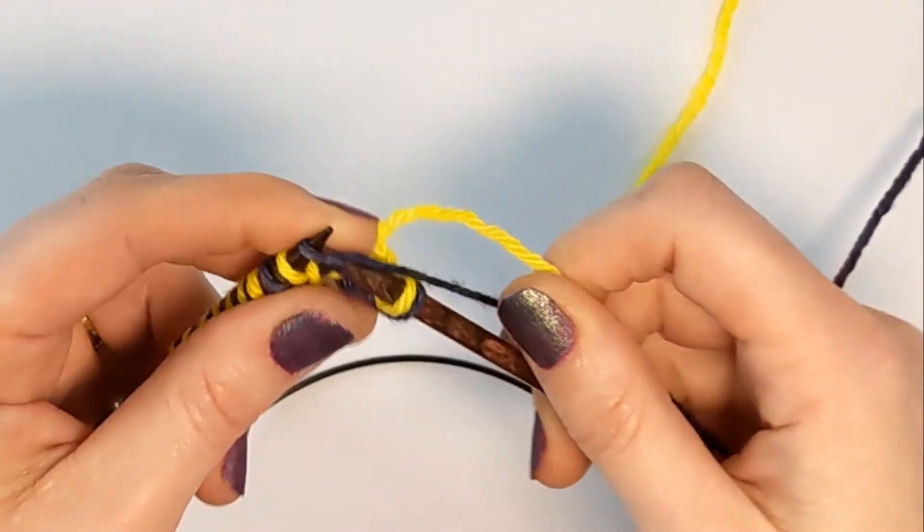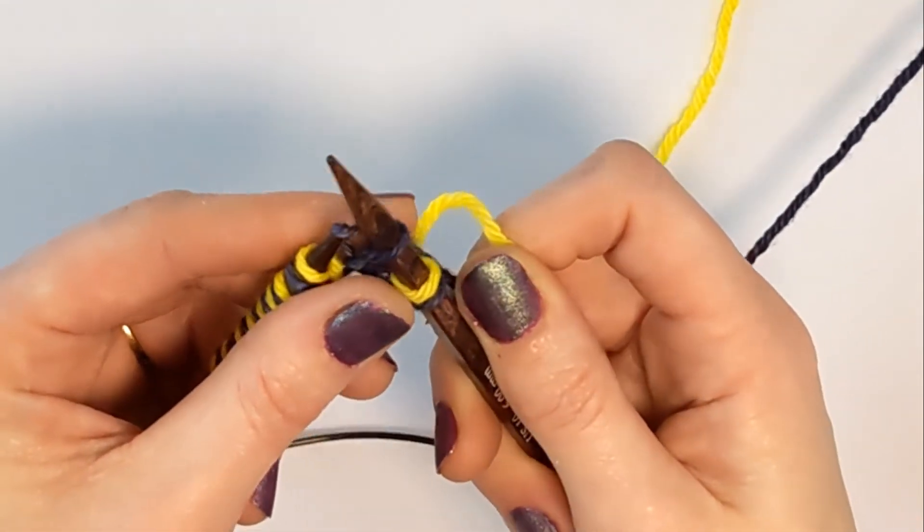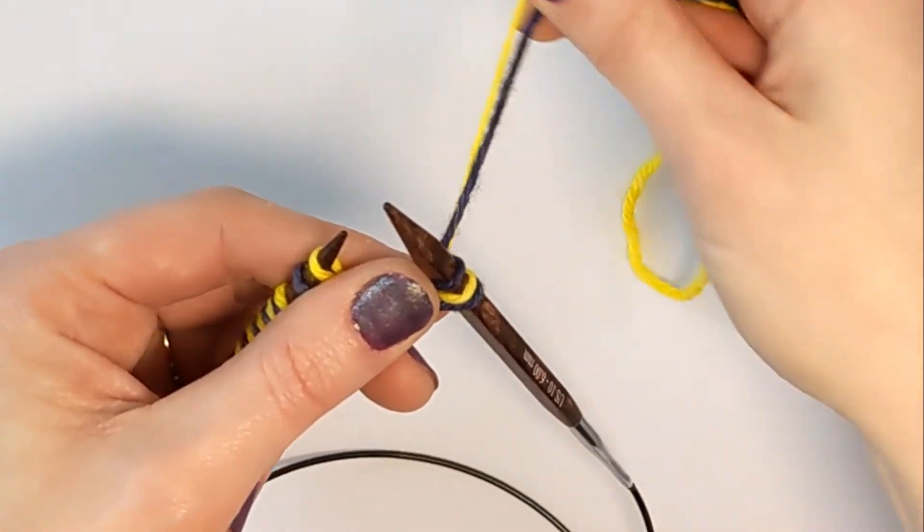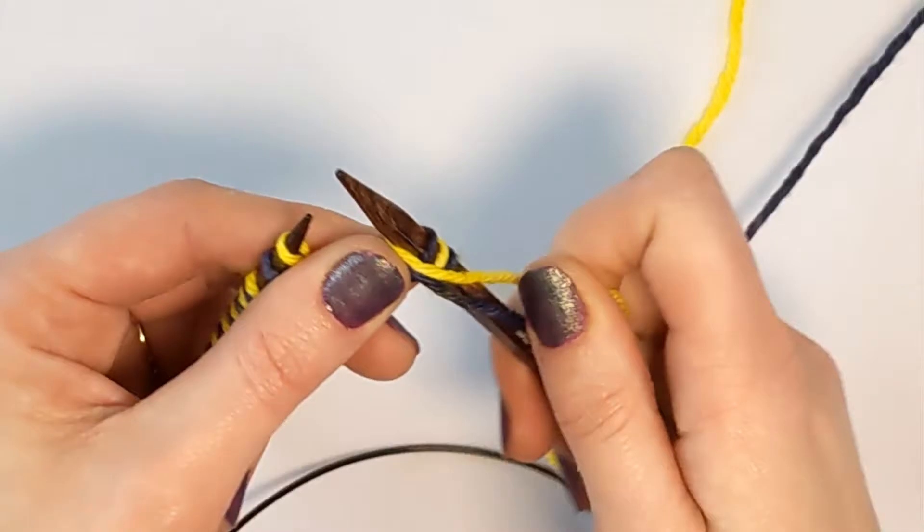Each stitch for basic double knitting will alternate colors. On this row, I'm knitting with the navy yarn and I'm purling with the yellow yarn.